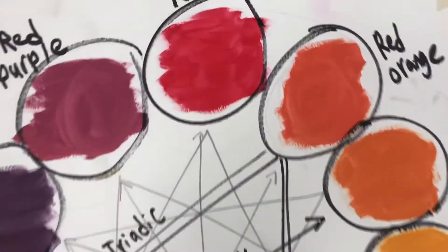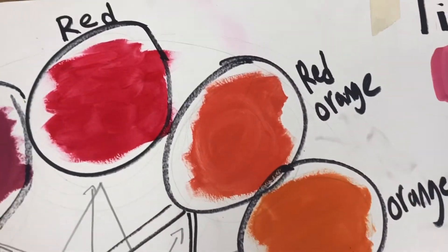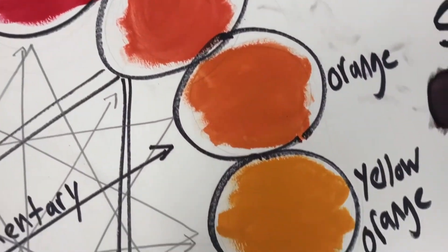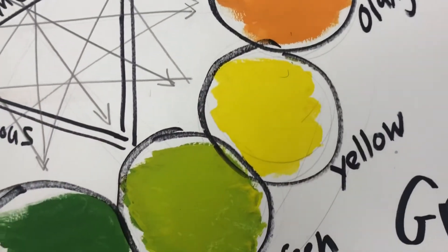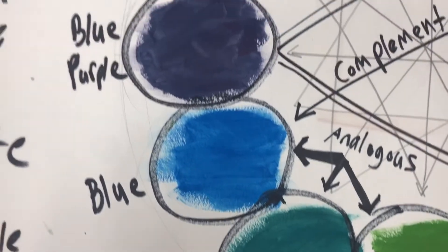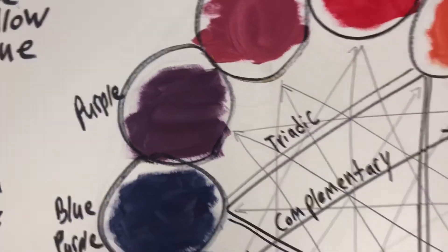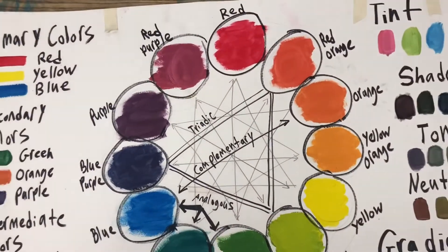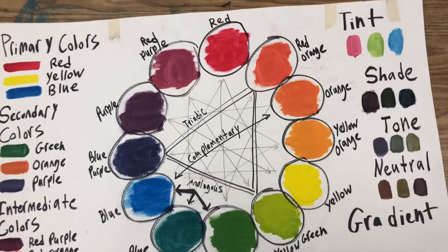There are 12 colors you can choose from: red, red-orange, orange, yellow-orange, yellow, yellow-green, green, blue-green, blue-purple, purple, and red-purple. Those are all the colors on the 12-part color wheel.